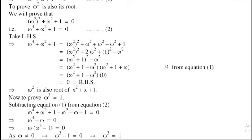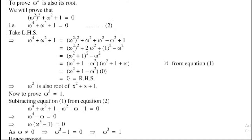Since 1 − 1 = 0 and omega × 0 = 0, and as omega does not equal 0, we have omega³ − 1 = 0. Expanding the formula, omega³ − 1 = 0, therefore omega³ = 1. Hence proved, which is the required solution.